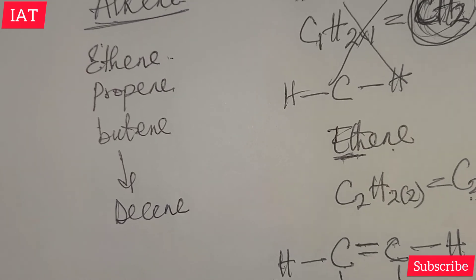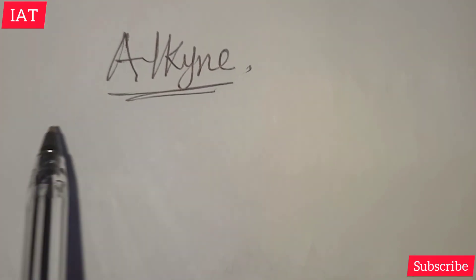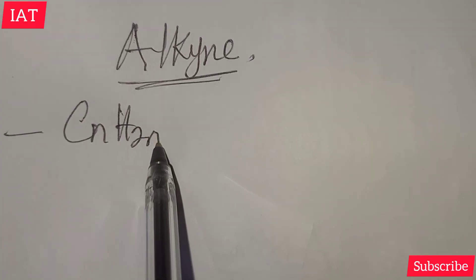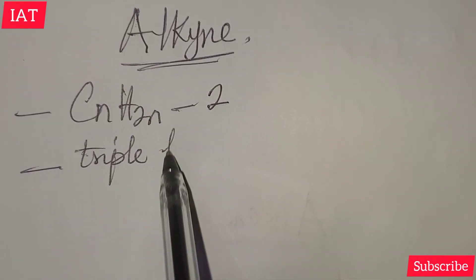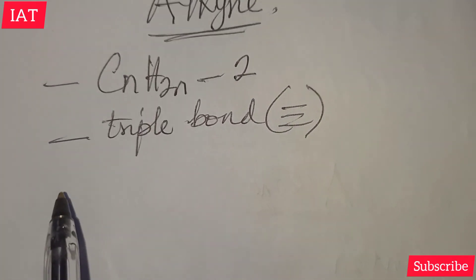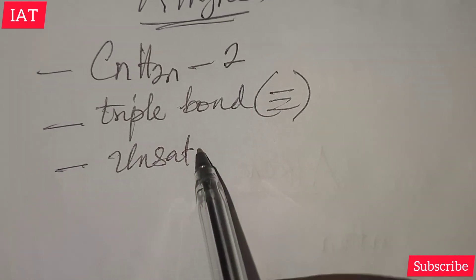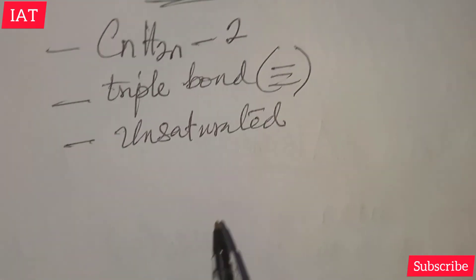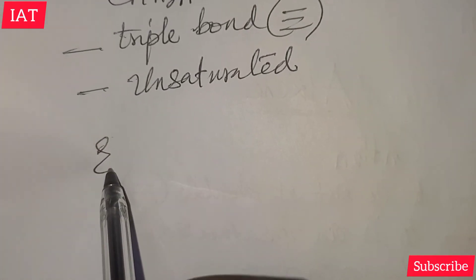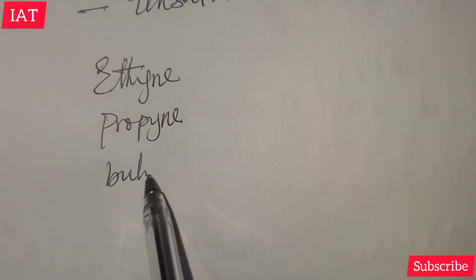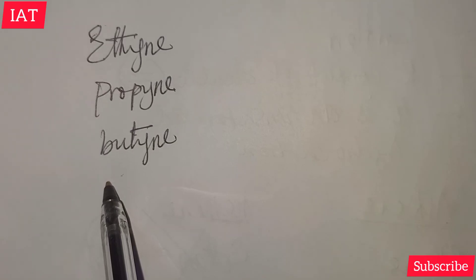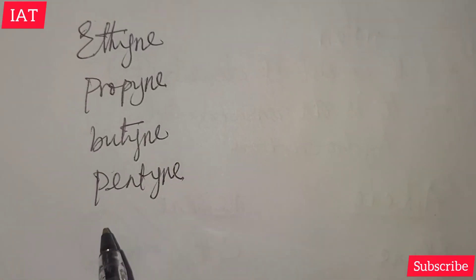The last class we are going to consider is the alkyne. Alkyne has the general formula CₙH₂ₙ₋₂. It consists of triple bonds, and it is also an unsaturated hydrocarbon. The first member of the homologous series is ethyne, followed by propyne, butyne, pentyne, etc.